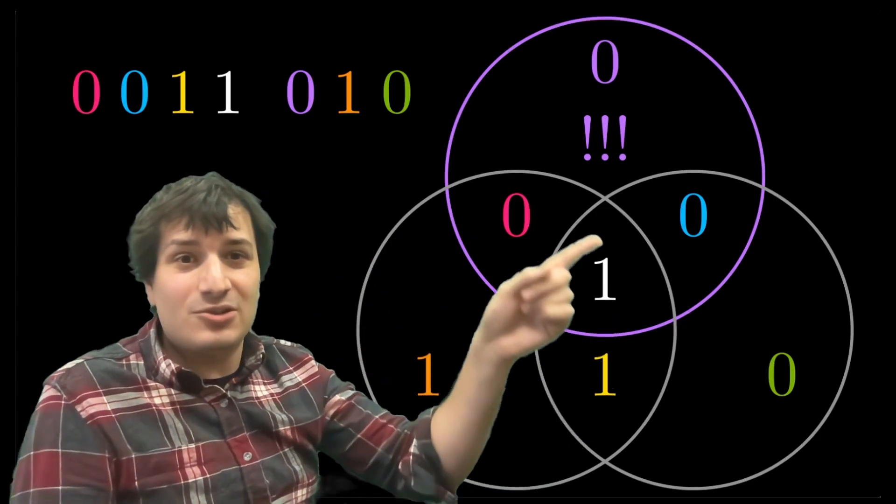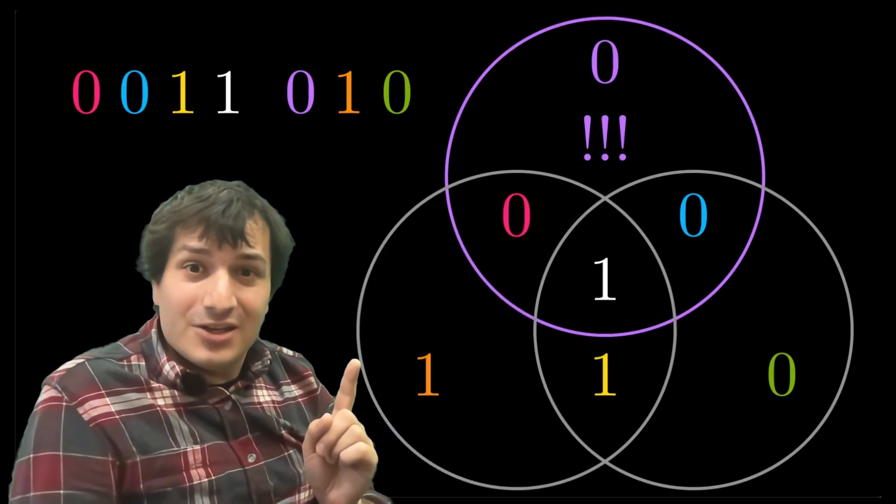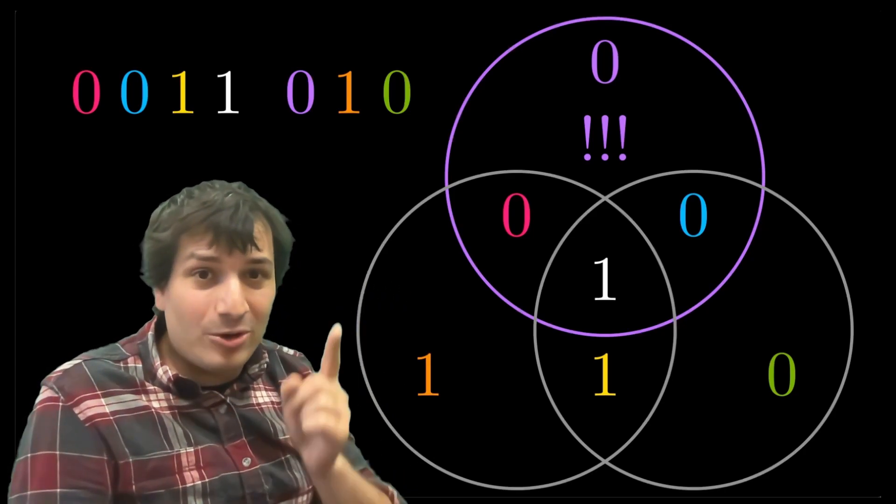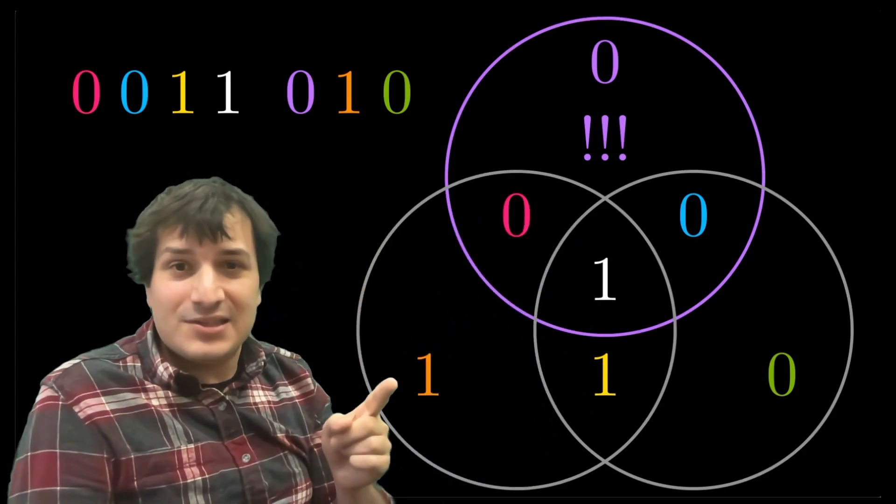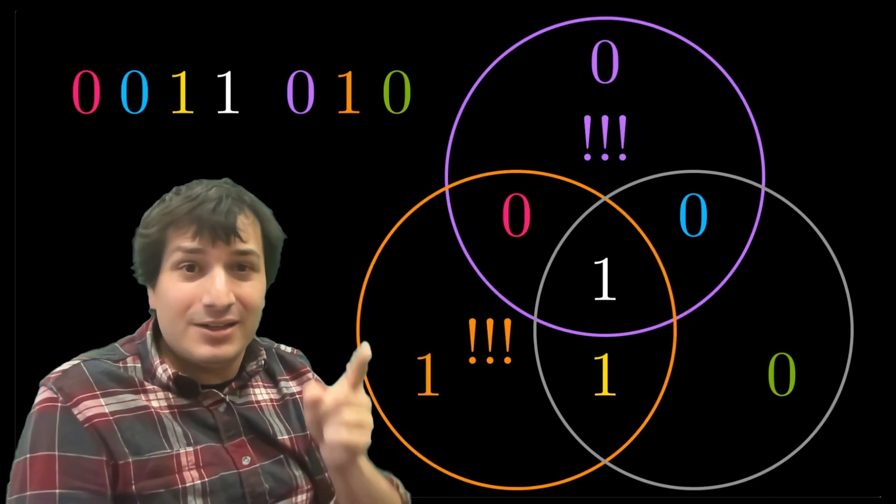Similarly, if you look down here at the circle on the left over here, one plus one plus one is three is an odd number. So again, there's a mistake. There's a mistake somewhere in this circle. And you can kind of think of this as the orange bit is sort of checking and figuring out that there is a mistake somewhere going on here.